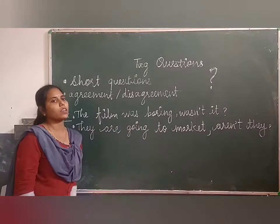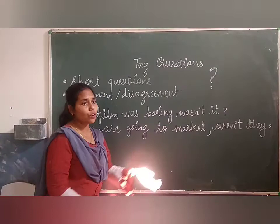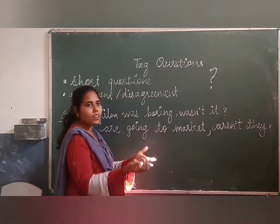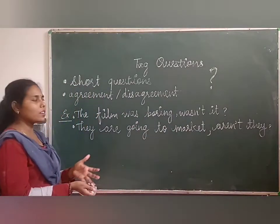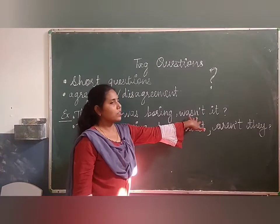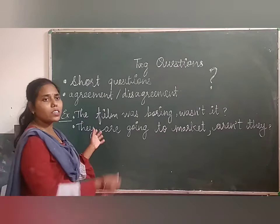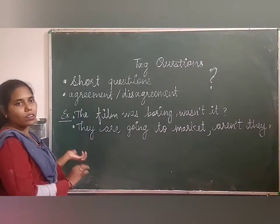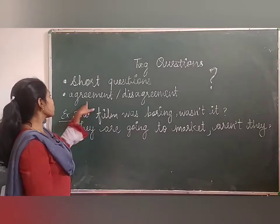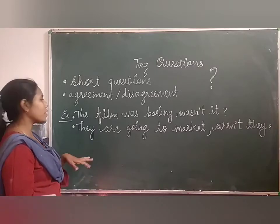For example: 'The film was boring.' Now, just to make it sure, we are adding 'Wasn't it?' — really, it was very boring. So we are adding a short question to the statement just to clarify the thing. It is conveying the message to seek agreement — whether the listener is agreeing or disagreeing.